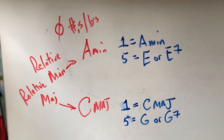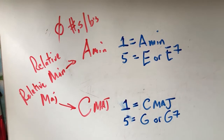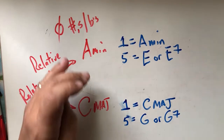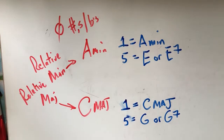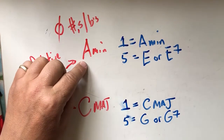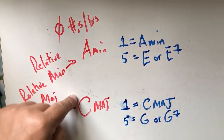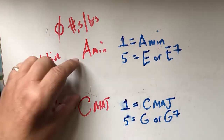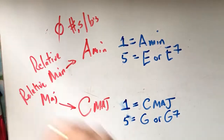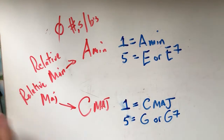Let's apply our chord function theory to a piece of music. If we write a piece of music in the key of A minor, remember that A minor is relative minor to C major, so they both have no sharps or flats.